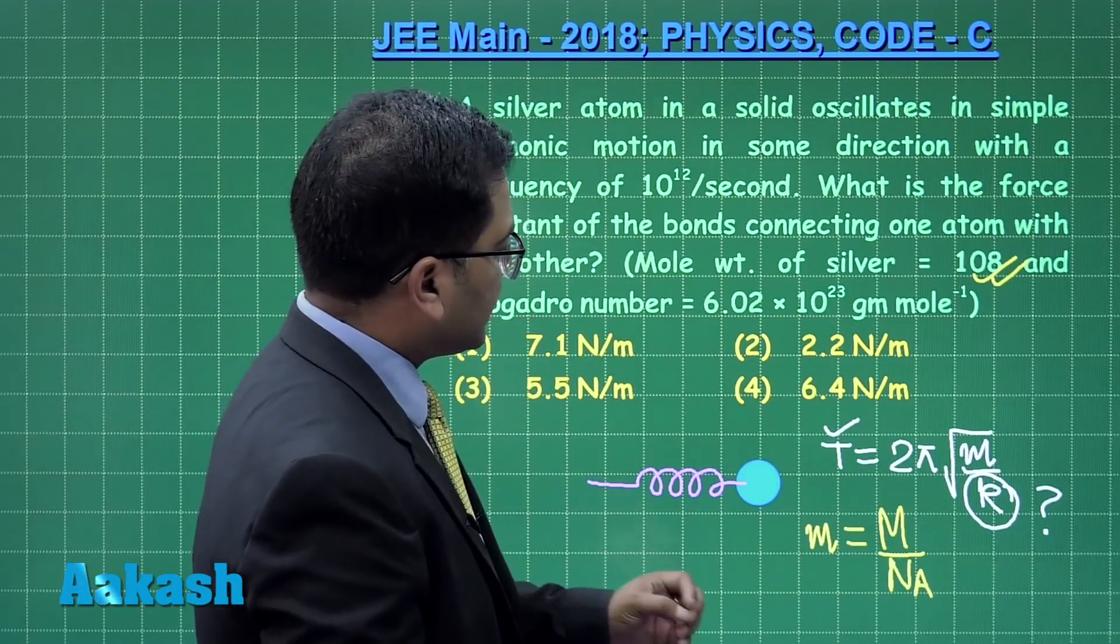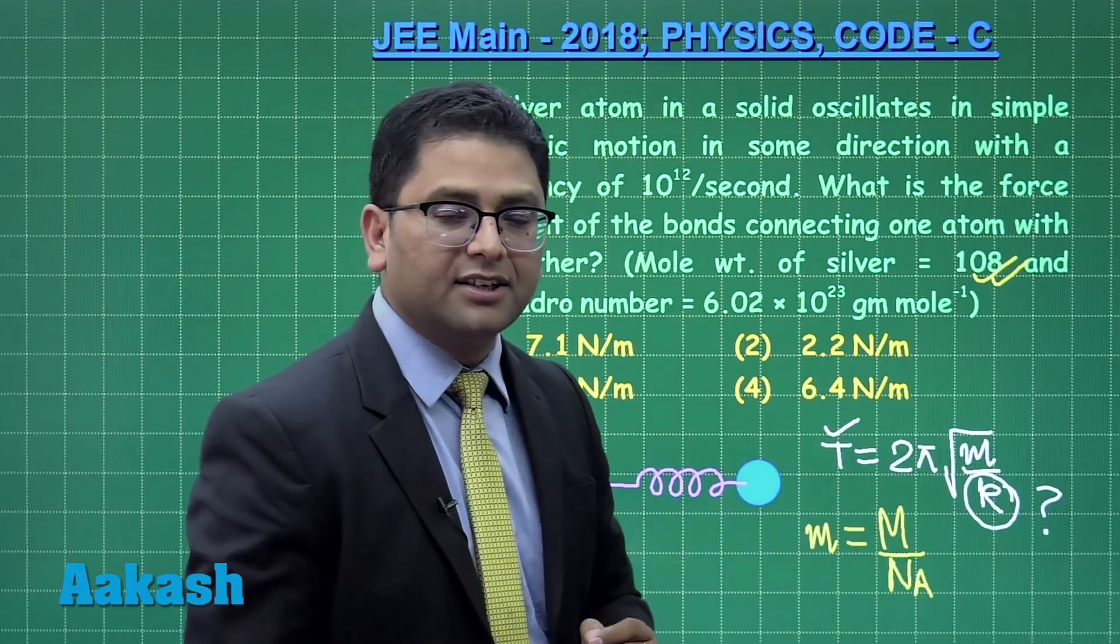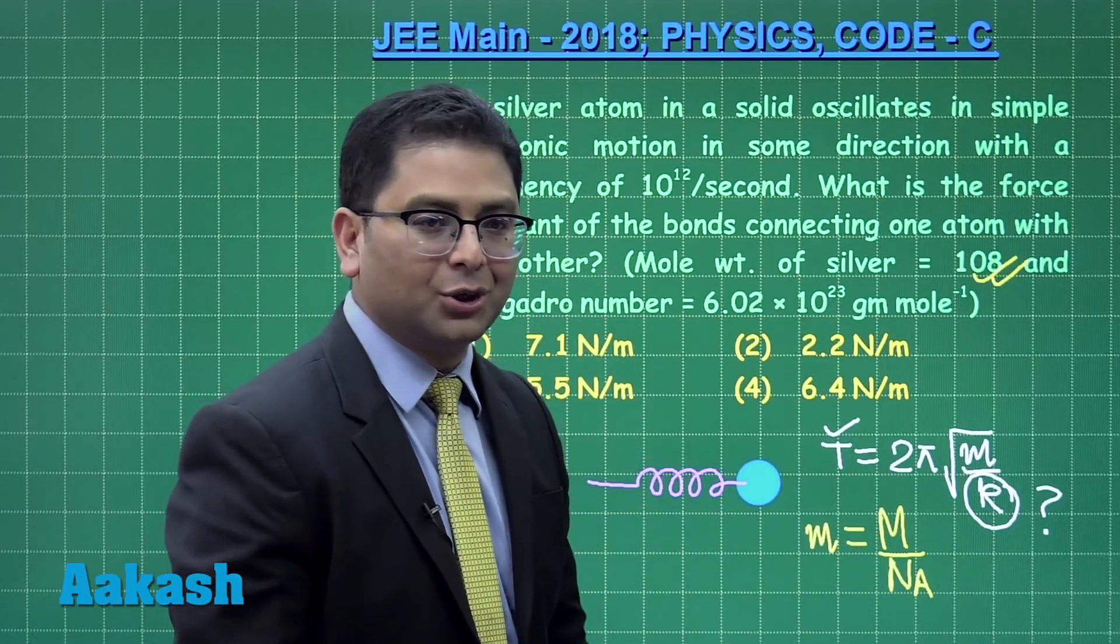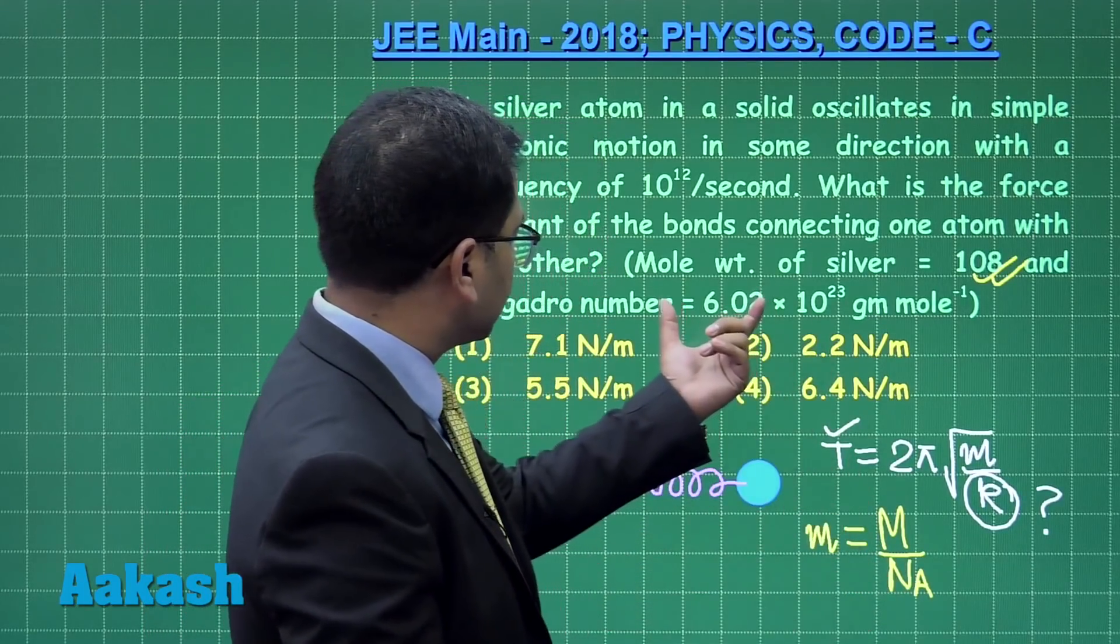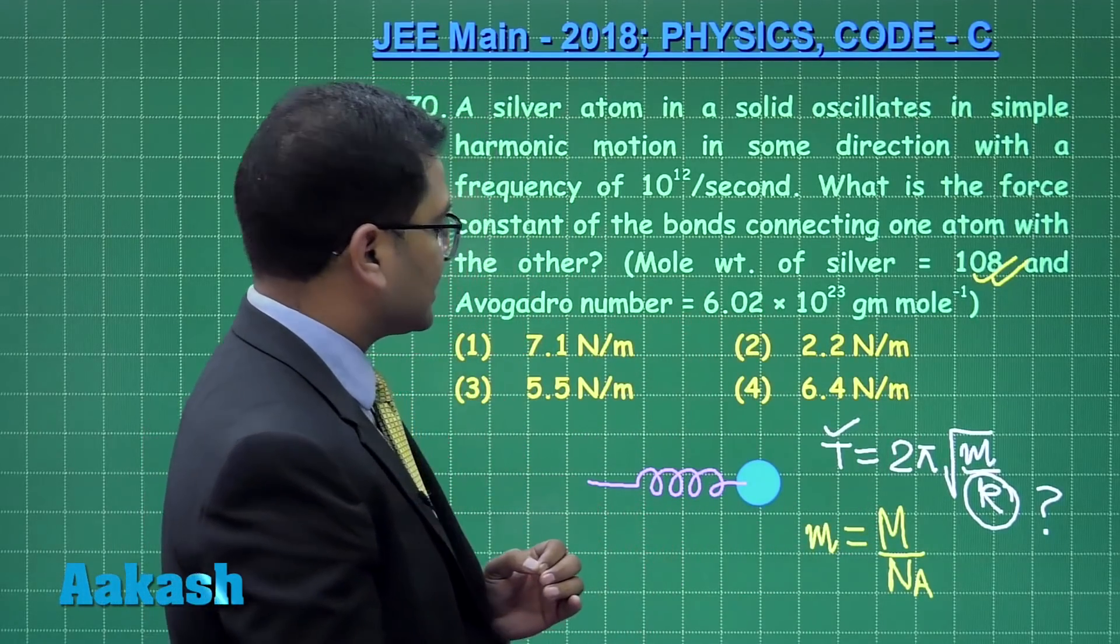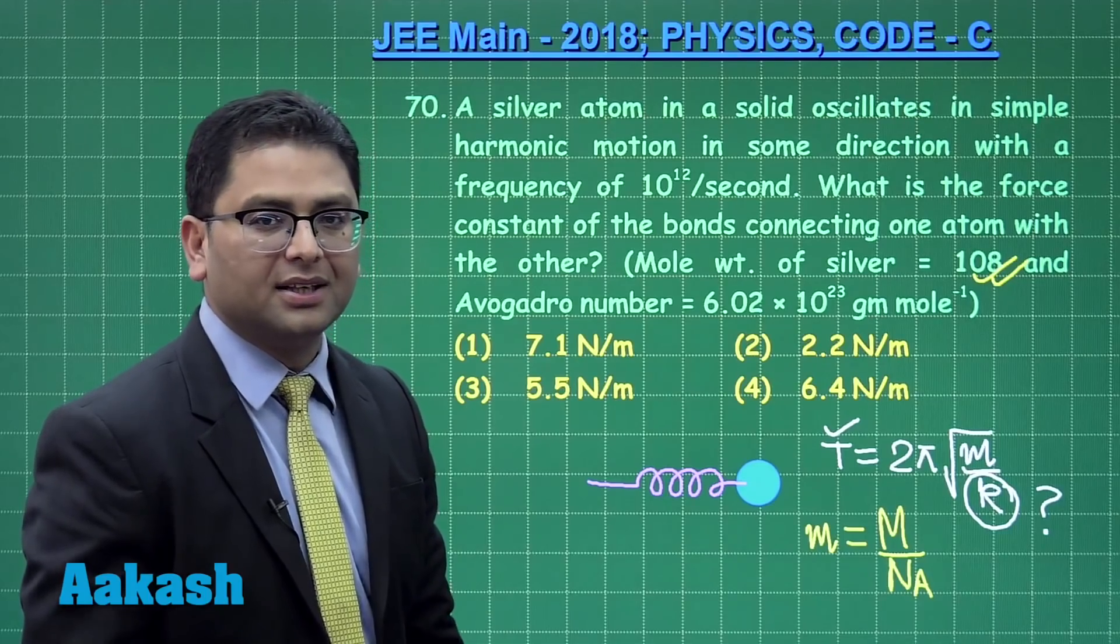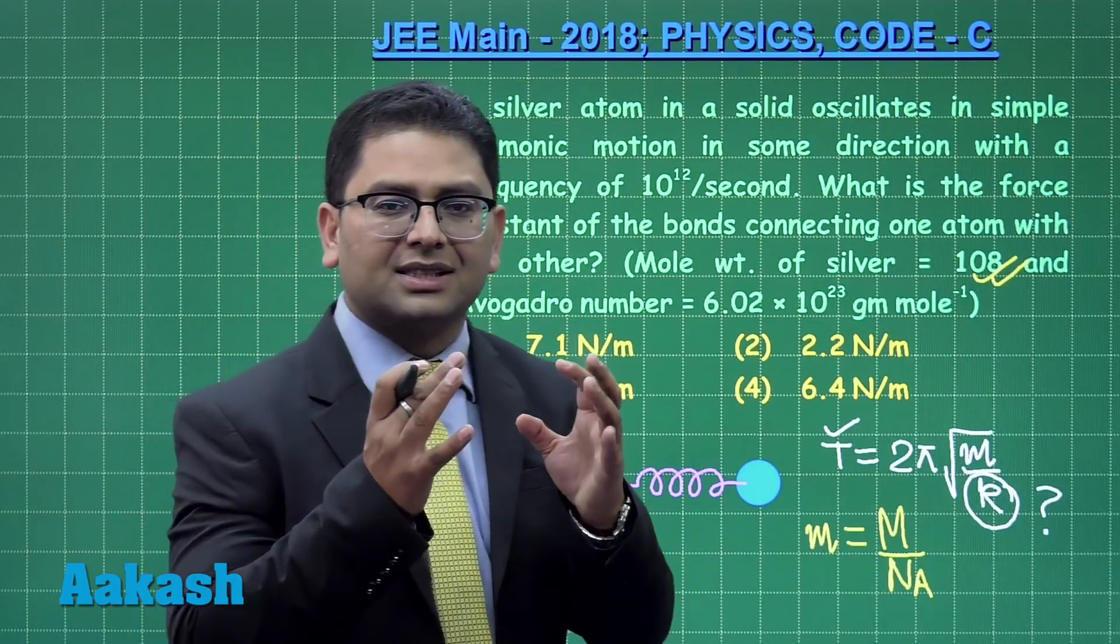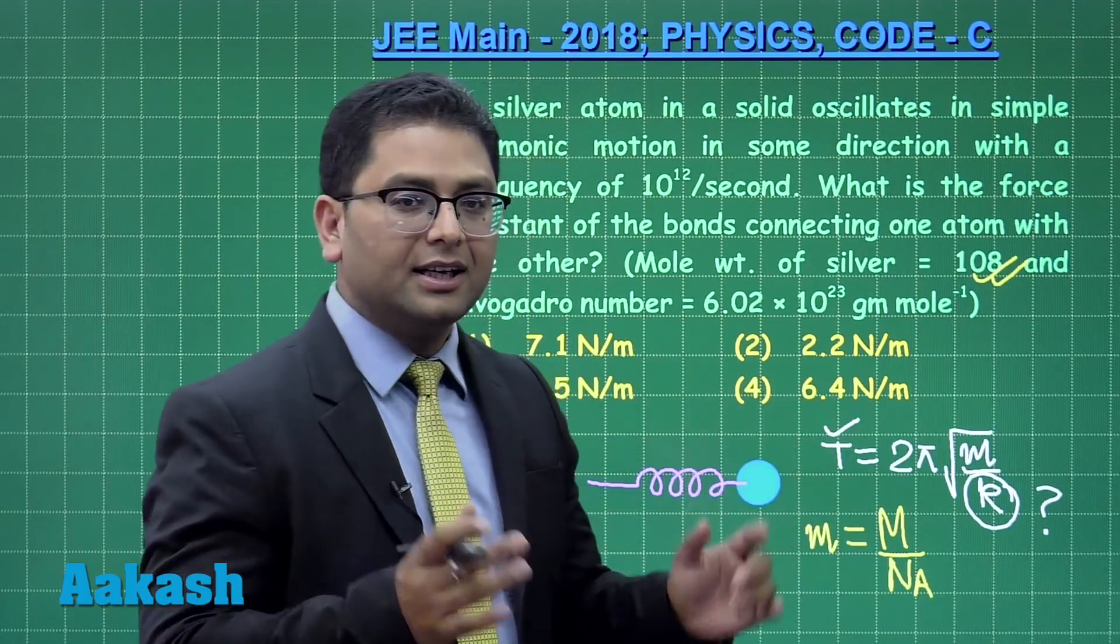The molar mass has been given as 108 grams. This m can be calculated as capital M divided by Avogadro's number. Just put the value of capital M here, 108 grams - do not forget to convert the unit - and Avogadro's number is given. Just put it here, calculate.